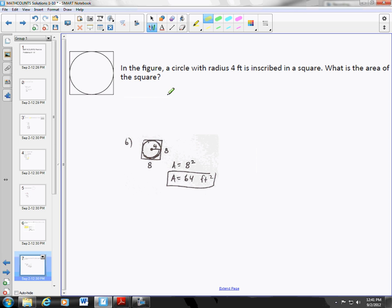In this problem we have a circle with radius 4 inscribed. Inscribed means it's inside it, barely touching the edges. And what is the area of the square? So if we know that the radius is 4, that means the distance from here to there is 4. Now the distance across all the way would be 4 and another 4, so that's 8. So that means each side of the square would be 8 by 8. An area is just side squared, 8 times 8 is 64. Always put squared feet.